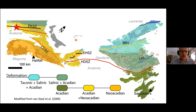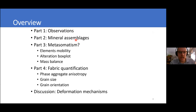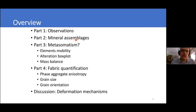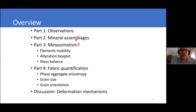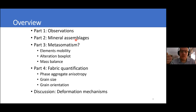This research question stems from field observations. To set up today's talk, I will first present the observations that support this hypothesis, then show the mineral assemblages that I think are part of that metasomatic alteration, and then test that hypothesis — are these assemblages the result of protolith alteration, different protoliths, or simply a metamorphic gradient? Once we've tested that, I'll show how I quantified the fabric evolution and discuss possible deformation mechanisms impacted by metasomatism.